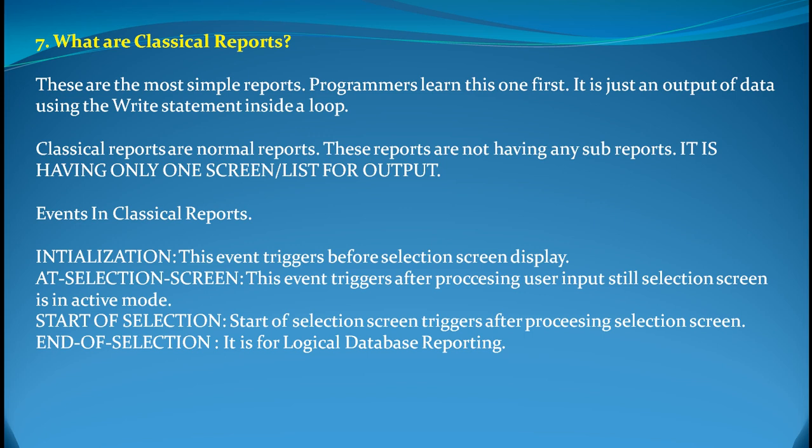A classical report is a very simple report that programmers learn at the beginning. It is just an output of data using the WRITE statement within a LOOP. That's all we do in order to get a classical report. Classical reports are very normal simple reports; they do not have any sub-reports. They have only one screen or list which is the final output.